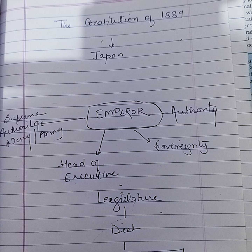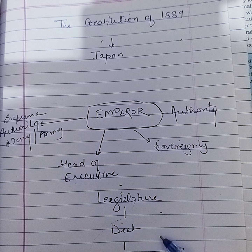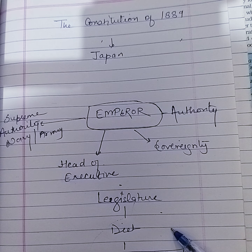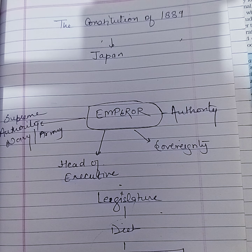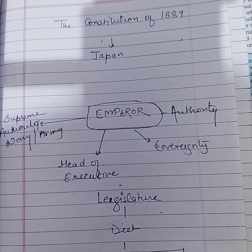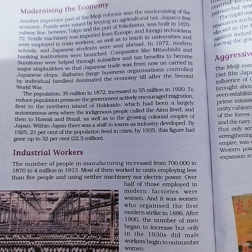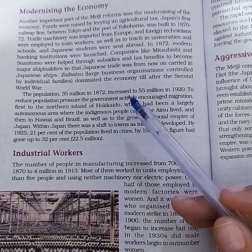The legislature was called the Diet. It consisted of two chambers: the House of Peers and the House of Representatives. The Diet was very powerful — no law could be passed and no new taxes could be imposed without its consent, and the annual budget was to be approved by it. There was also a Privy Council, a distinct body appointed by the Emperor to give personal advice to him, made up of distinguished statesmen. Cabinet ministers were its ex-officio members.